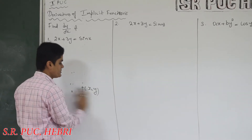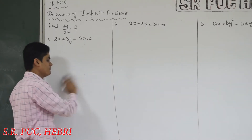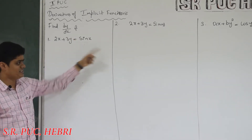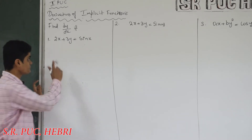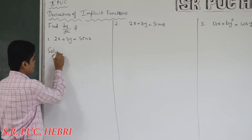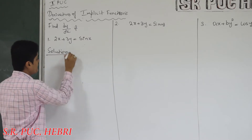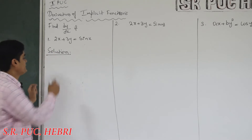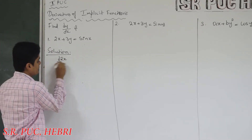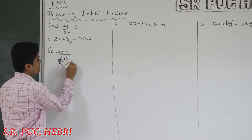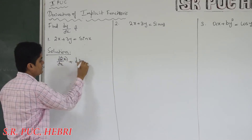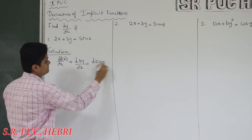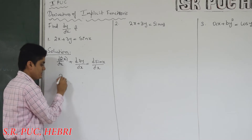There is no other theory needed for implicit functions — we will directly take the derivatives of such implicit functions. All the problems are very simple, so listen carefully. I will show you how to answer the first question; you can try the remaining questions yourself. Find the derivative of each term separately. What is the derivative of 2x? It is 2.